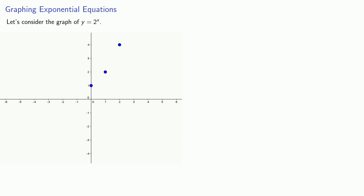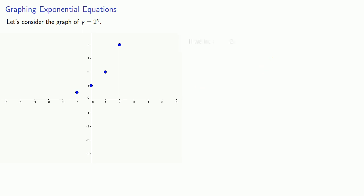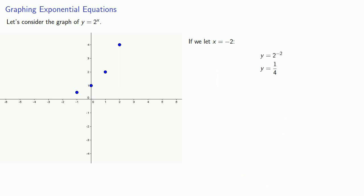How about some negative values? If we let x equal negative 1, then y is equal to 1/2. So (-1, 1/2) is on the graph. If we let x equal negative 2, y is 1/4. So (-2, 1/4) is on the graph.